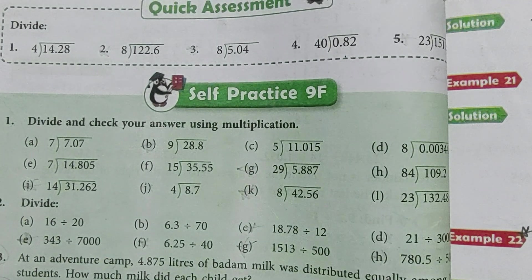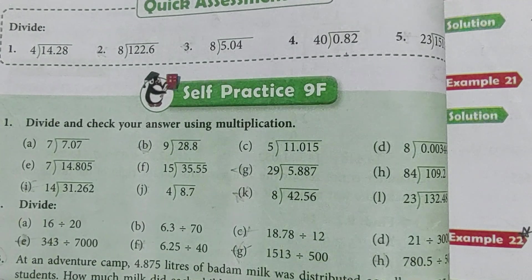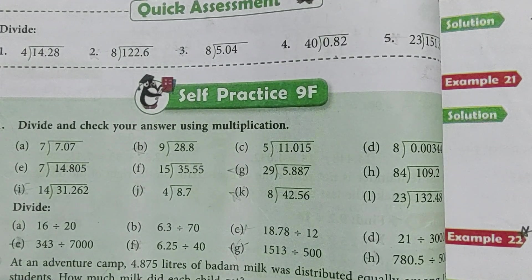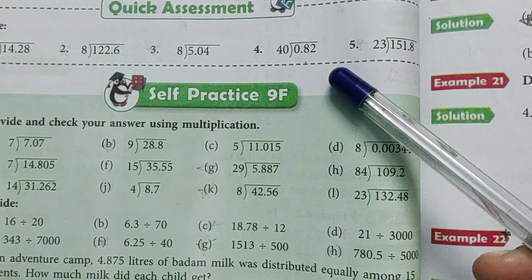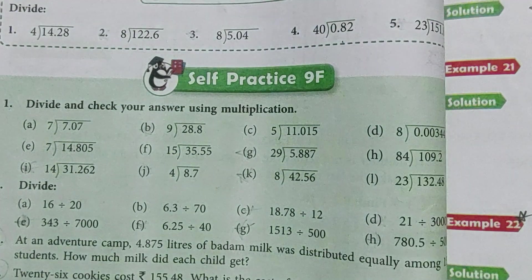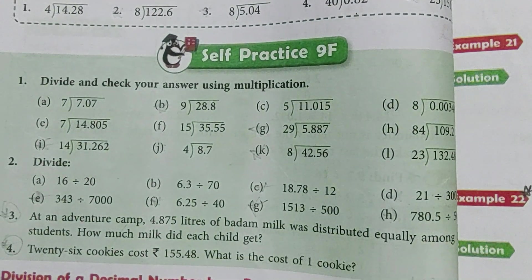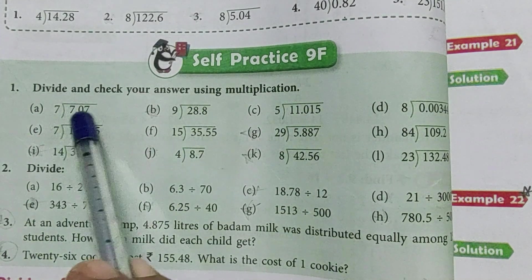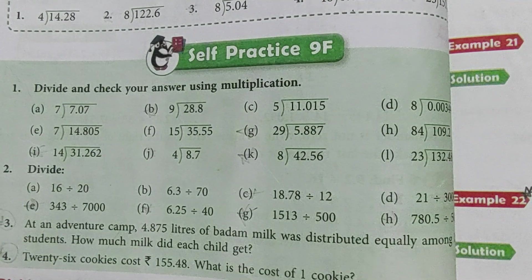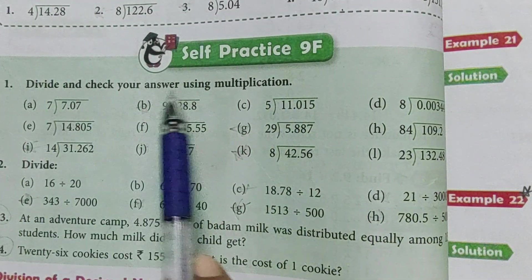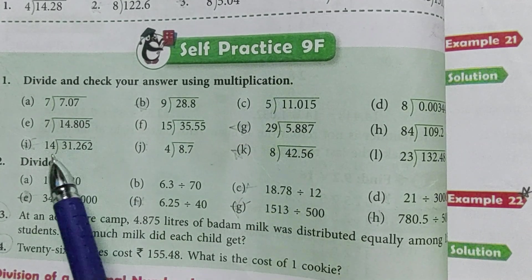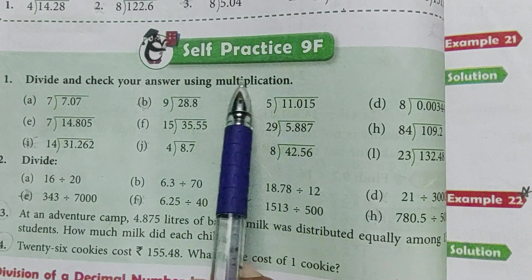Hello children, welcome back to my channel. Yesterday we started the division of decimals by a counting number and solved the question given in the quick assessment portion. Today we will continue with Self Practice 9F. Let's start. First question is 7.07 divided by 7. The question says divide and check your answer using multiplication. First we have to divide, find the quotient, and after that check the answer by multiplication.